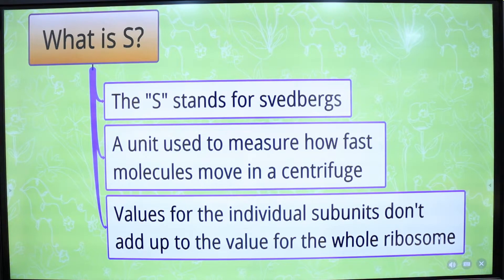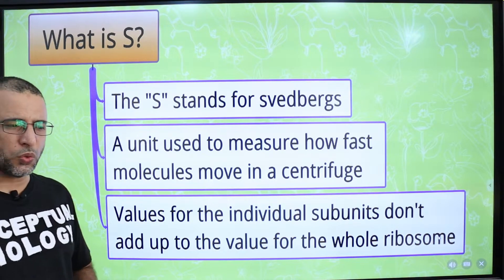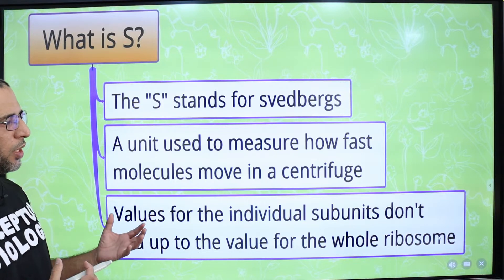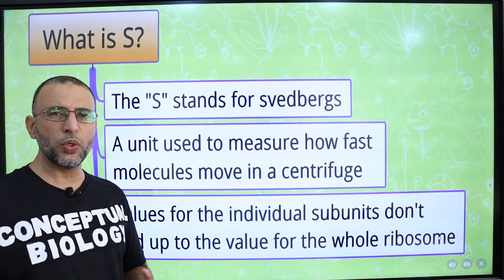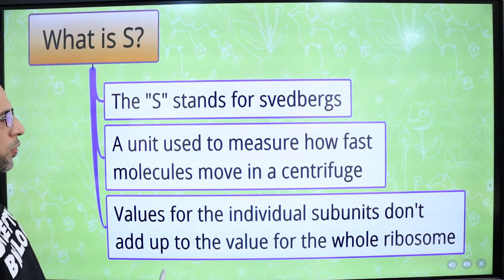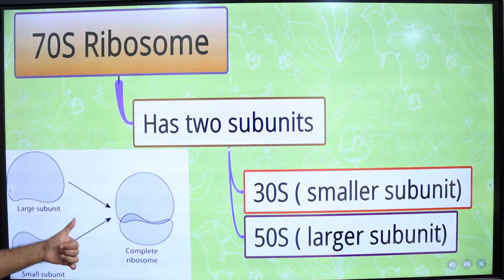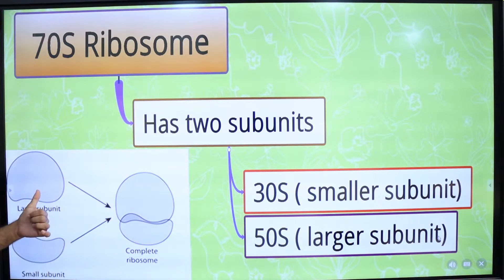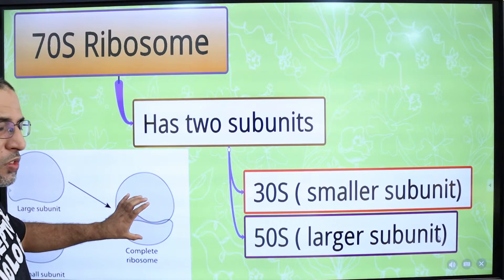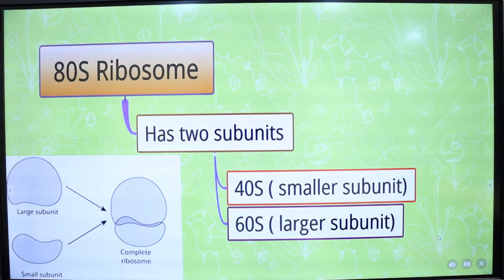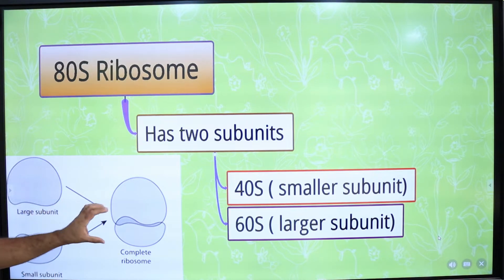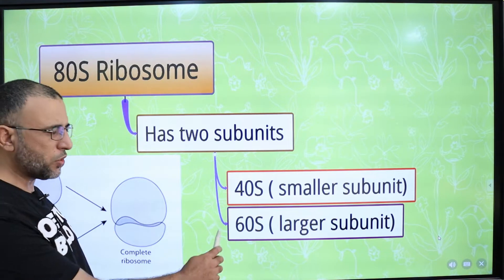S stands for Svedberg, a unit used to measure how fast molecules move in a centrifuge. Importantly, the values for the individual subunits do not add up to the value for the whole ribosome. In prokaryotic ribosomes, the small subunit is 30S and the large subunit is 50S, but the complete ribosome is 70S. In eukaryotic ribosomes, the small subunit is 40S, the large subunit is 60S, and the complete ribosome is 80S.